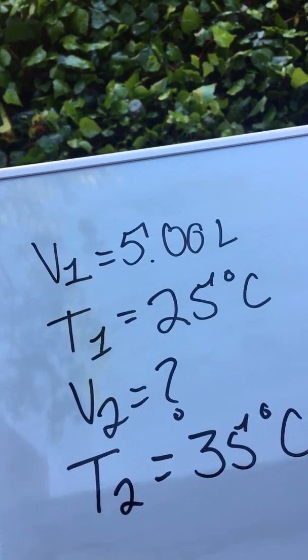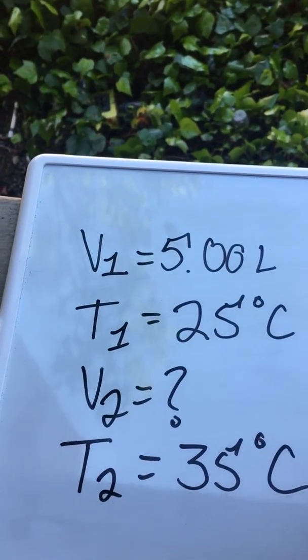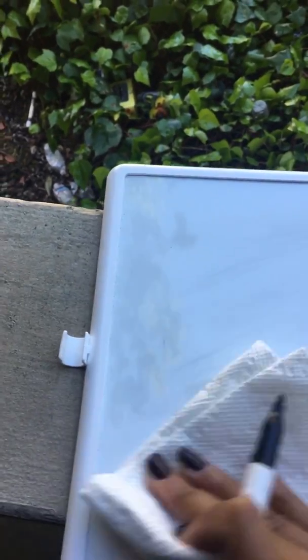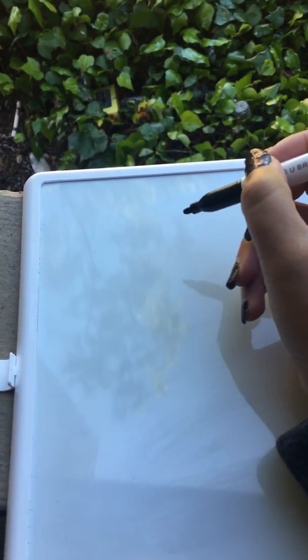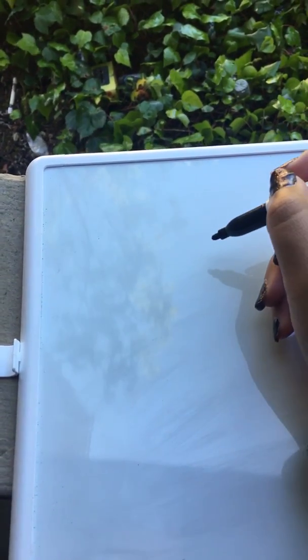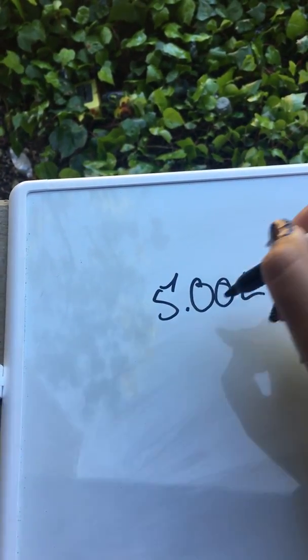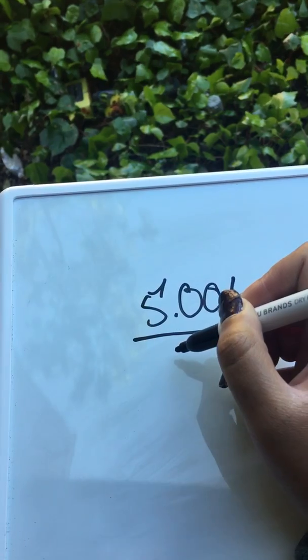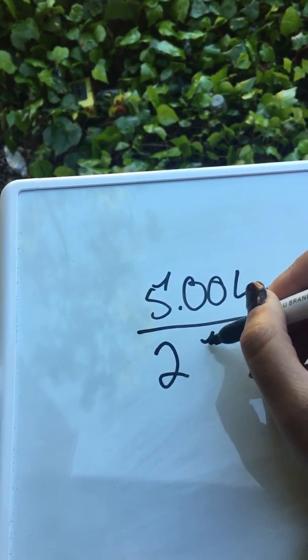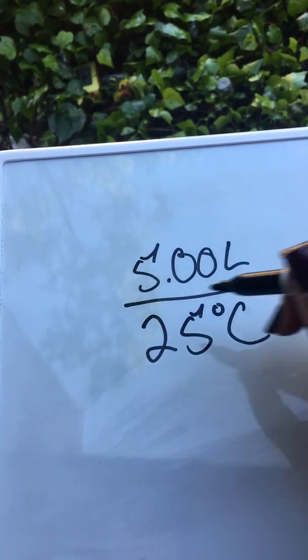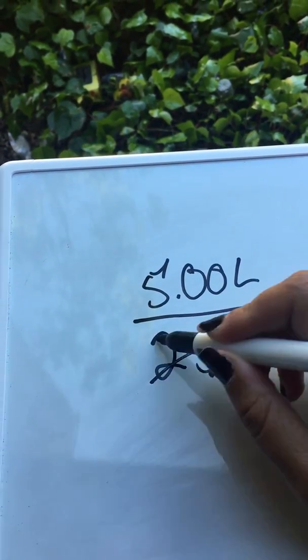All right, now as I showed you before with how you are going to do that, I showed you how to set up your equation. Now you're going to have your volume of five liters on top. Now is it over 25 degrees Celsius? No.